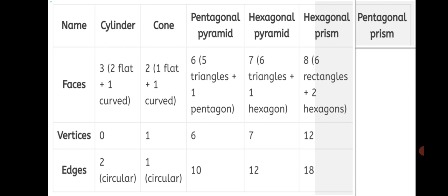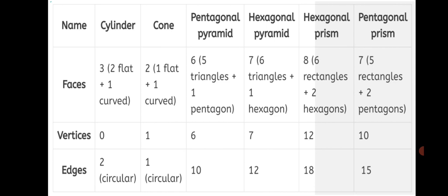Let's write for pentagonal prism. Faces will be 7: 5 rectangles at the sides, since it is a pentagon it will have 5 sides, and 2 faces of the pentagons 1 on top and 1 at the bottom, so 5 plus 2, total 7 faces. Vertices: total 10 — each pentagon has 5 vertices, top pentagon 5 vertices, bottom pentagon 5 vertices. Edges: 5 of the top pentagon, 5 of the bottom pentagon and 5 of the height of each rectangle at the sides, so total 5 threes are 15 edges.